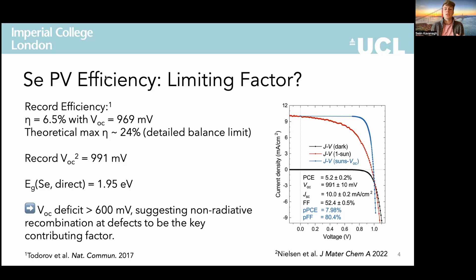This efficiency loss comes from a relatively low open circuit voltage of just under 1 volt compared to a direct bandgap of 1.95 electron volts. Open circuit voltage deficits are typically the result of non-radiative electron-hole recombination at defects, and in fact this defect-mediated recombination is almost always the key limiting factor in emerging solar cell technologies. So in our work, we set out to characterise this material computationally and compute its intrinsic and extrinsic defect chemistry to identify the key culprits and potentially devise some passivation or mitigation strategies for these defects.